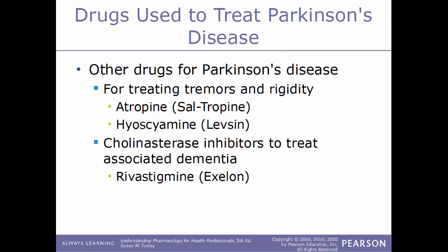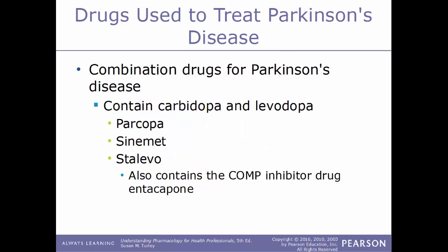Some other drugs used to treat Parkinson's include drugs for tremors and rigidity such as atropine (Sal-Tropine) and hyoscyamine (Levsin). Cholinesterase inhibitors such as rivastigmine (Exelon) treat the associated dementia of Parkinson's. Combination drugs containing carbidopa and levodopa include Parcopa, Sinemet, and Stalevo — Stalevo also contains the COMT inhibitor entacapone.